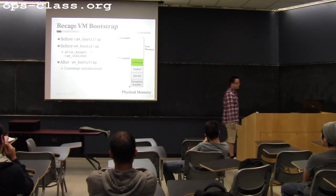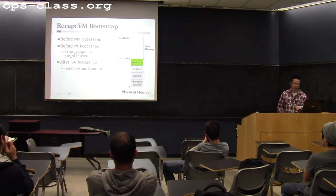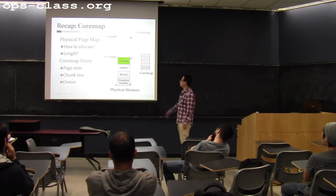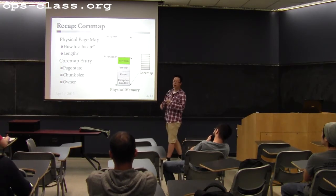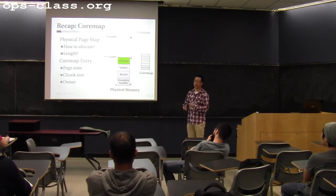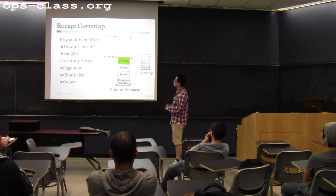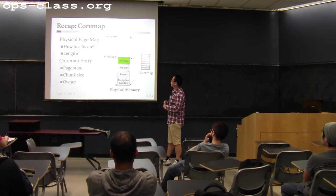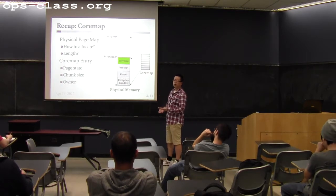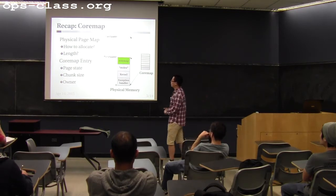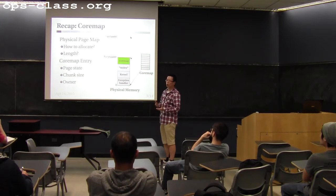What changes is the status of the pages after this region, after VM gets bootstrapped. The coremap is basically an array of entries — each entry corresponds to one physical page. Each entry contains information about that page: whether the page is available, what's the page status, what's the page's owner, and so on. You can figure out how many coremap entries you need by calculating how many physical pages you have in total. If you have 1,000 physical pages, the length of the coremap will be 1,000.